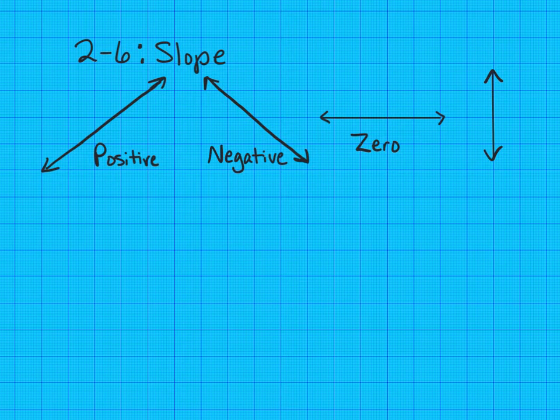A line that is vertical, straight up and down, is called undefined slope. So you have four different ways that we can describe slope.